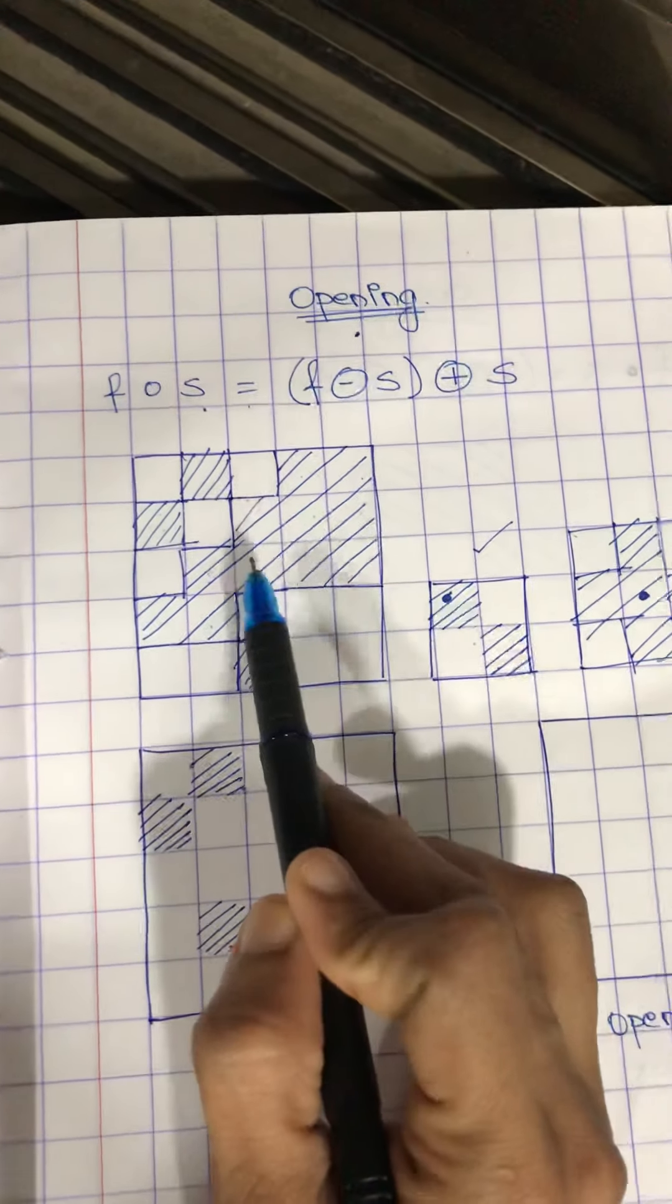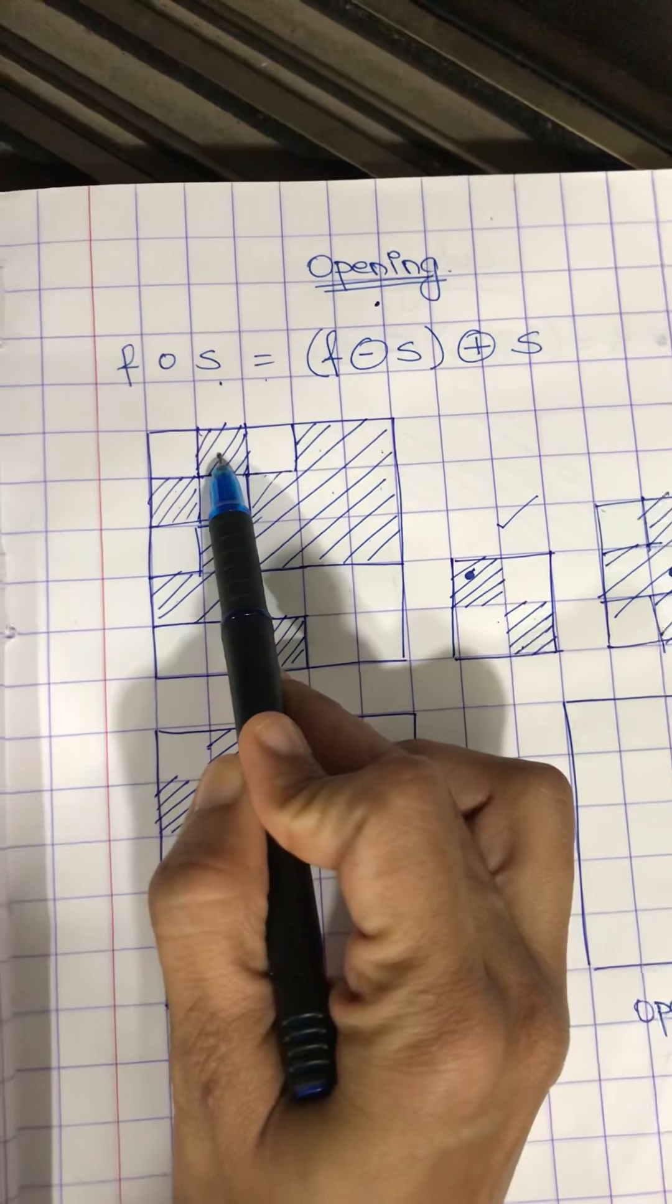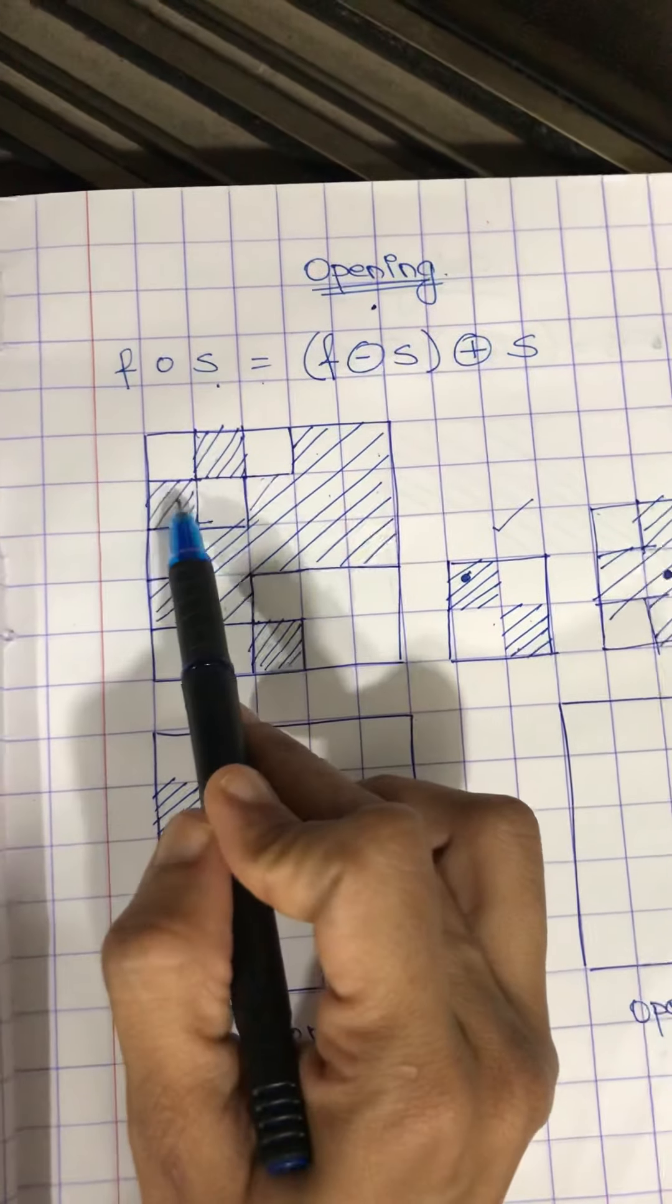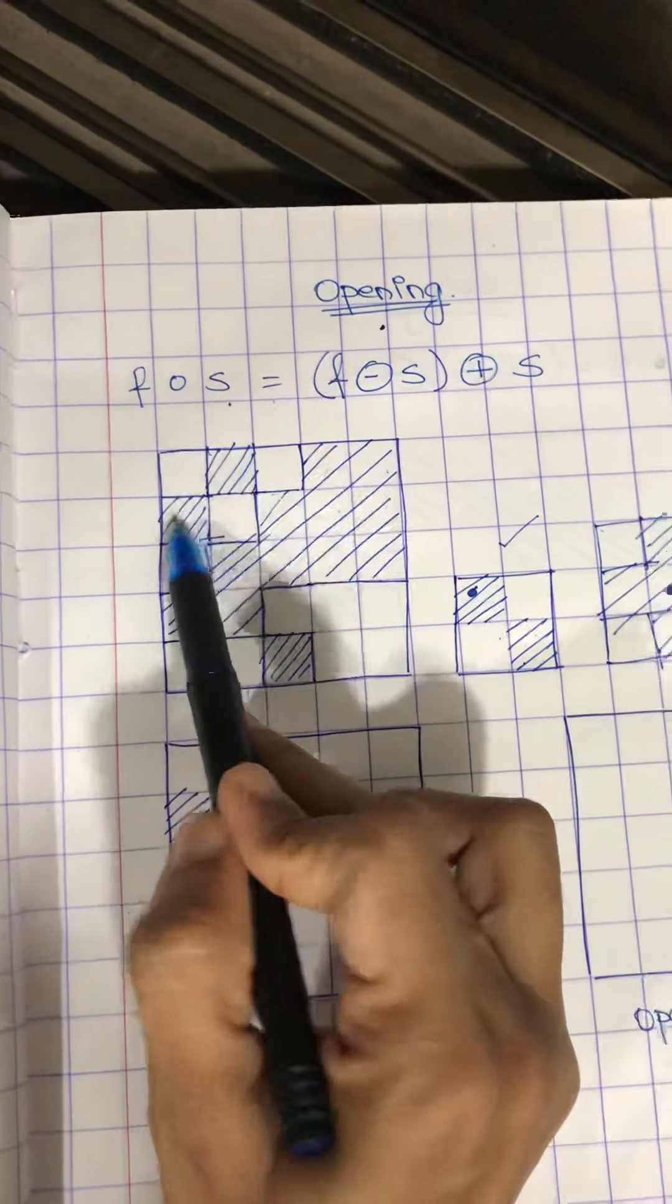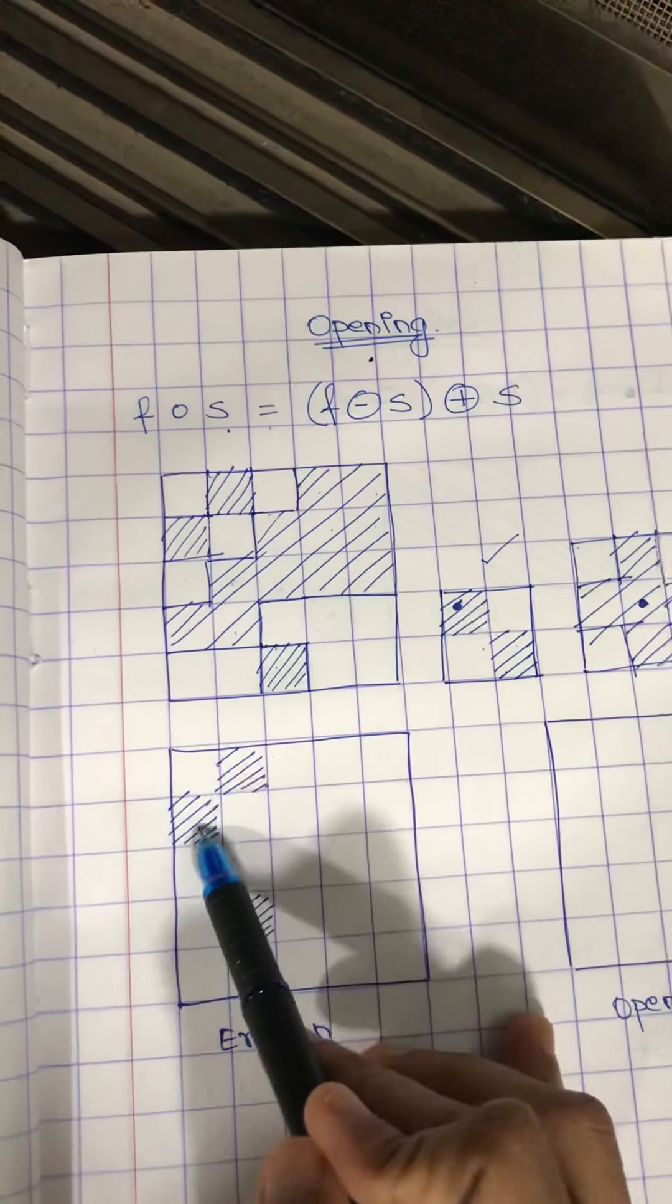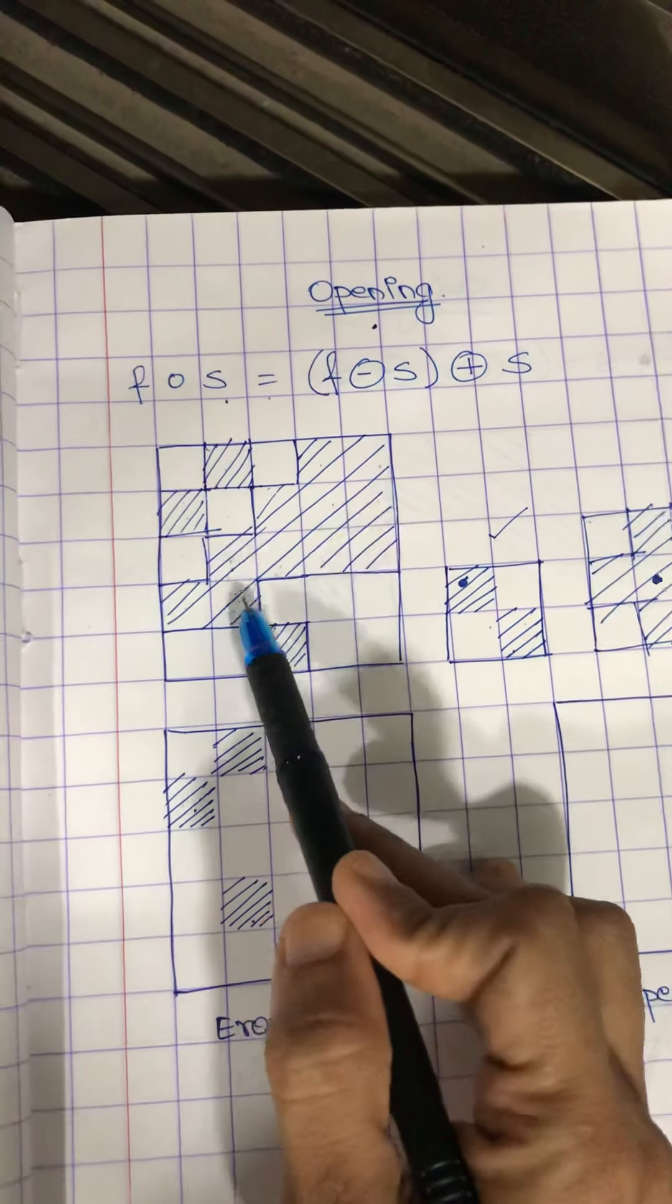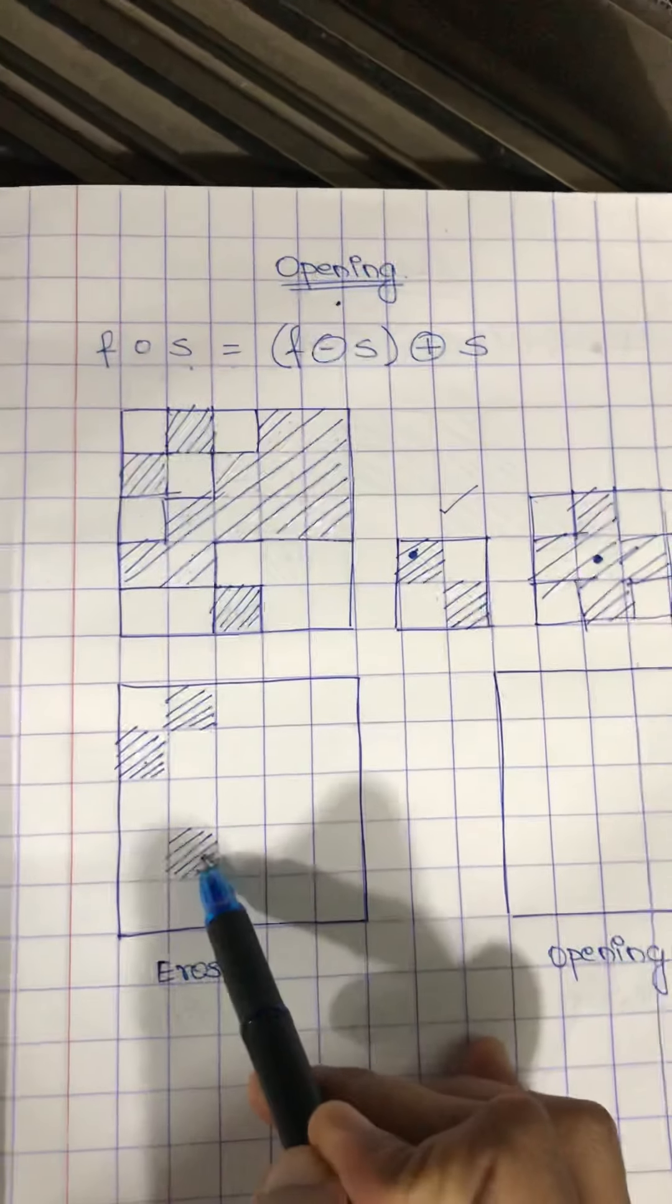So, looking at this structuring element and this image, it is a complete fit here at this pixel. As you can see, these two are shaded, these two are non-shaded. Even at this, these two are shaded, these two are non-shaded. So these two pixels are still part of the foreground pixel, and again at this pixel it is a fit.